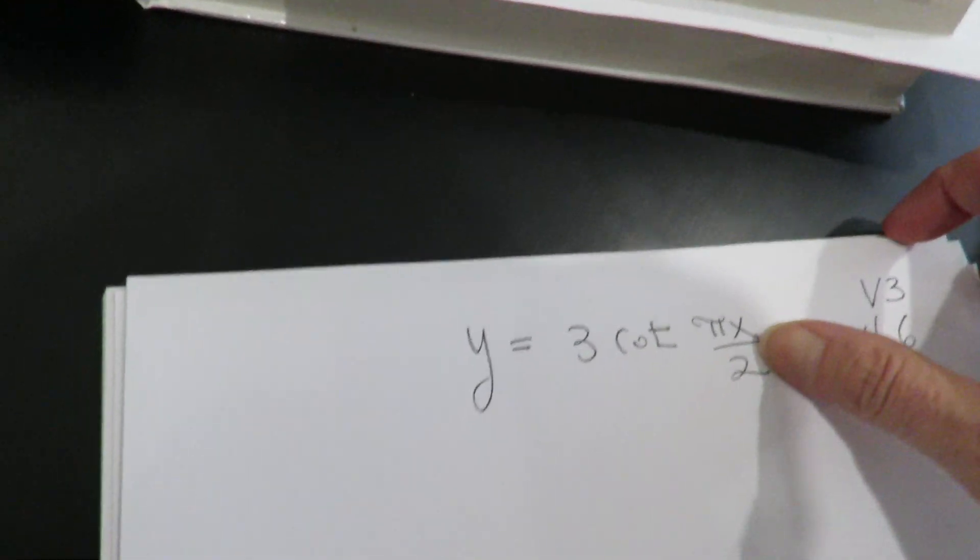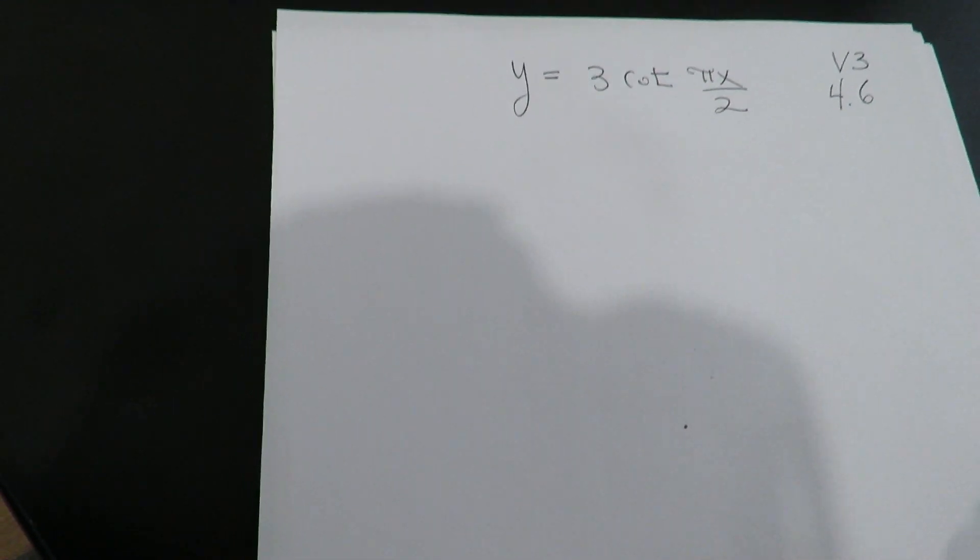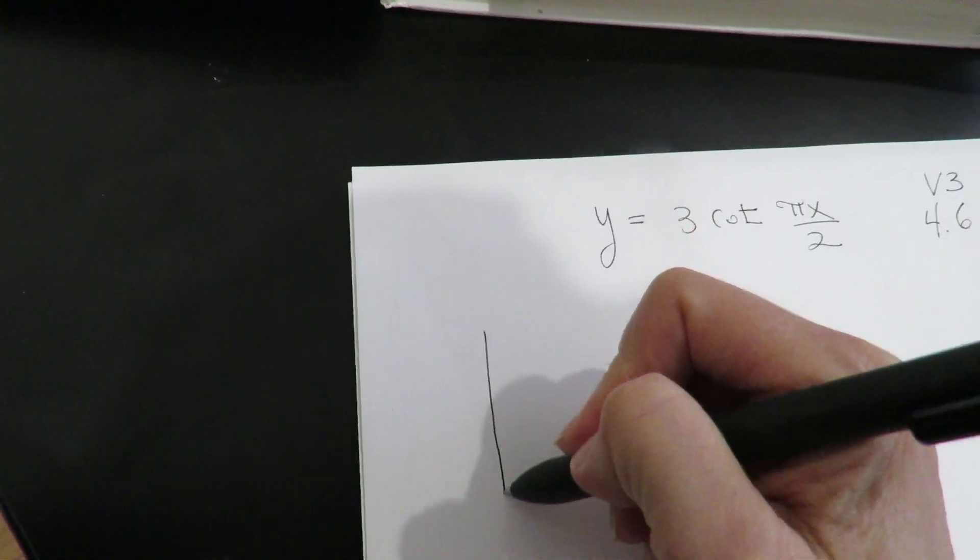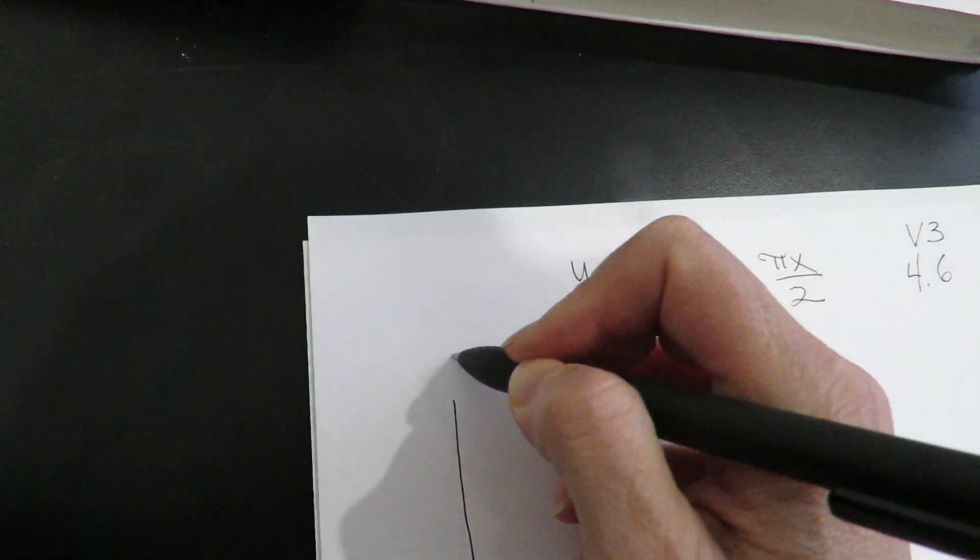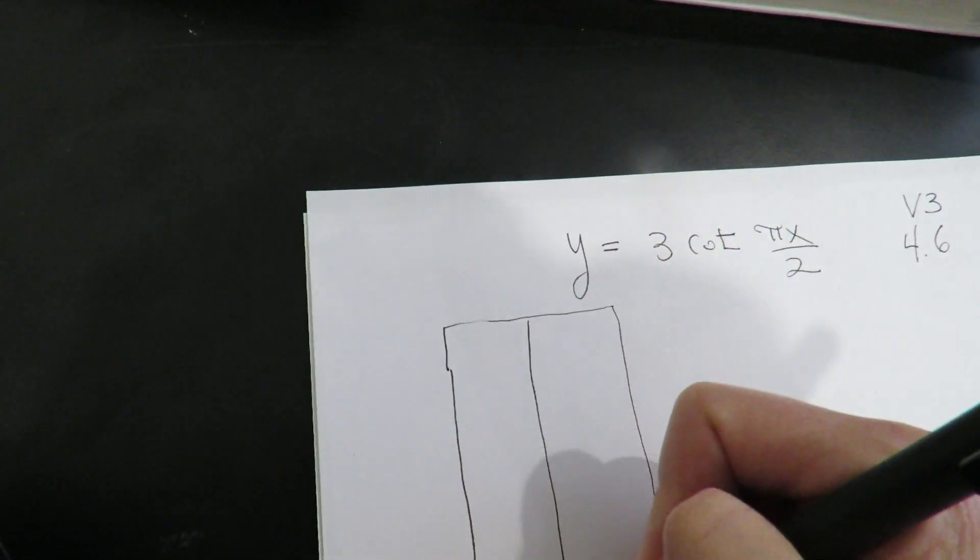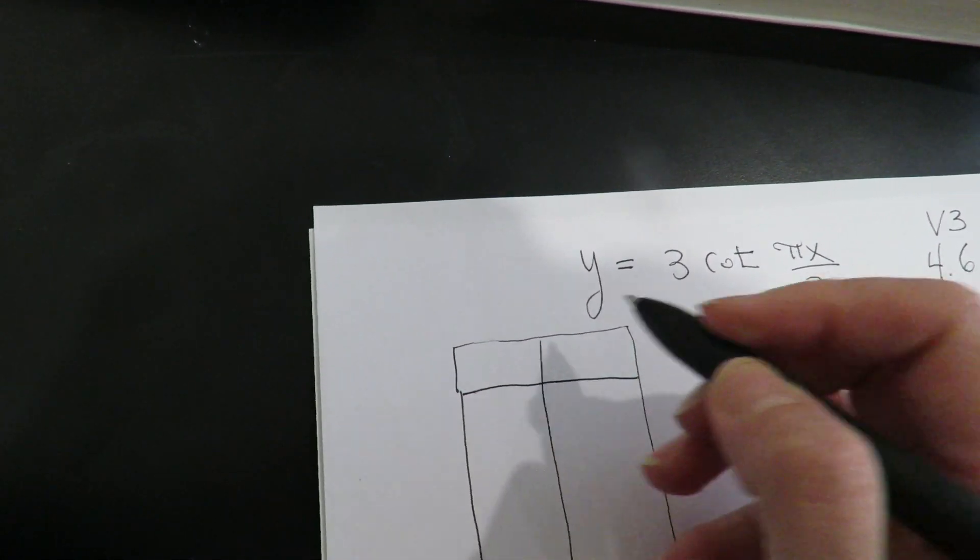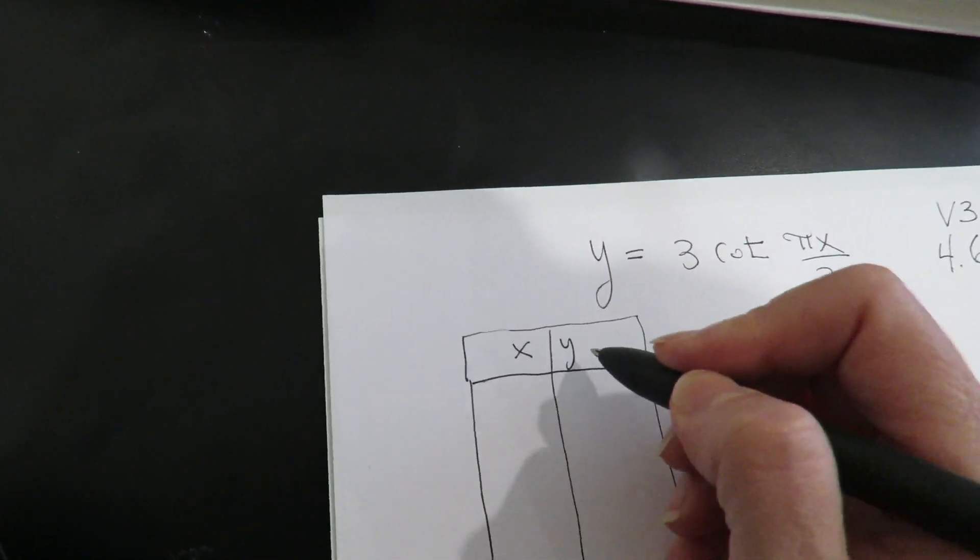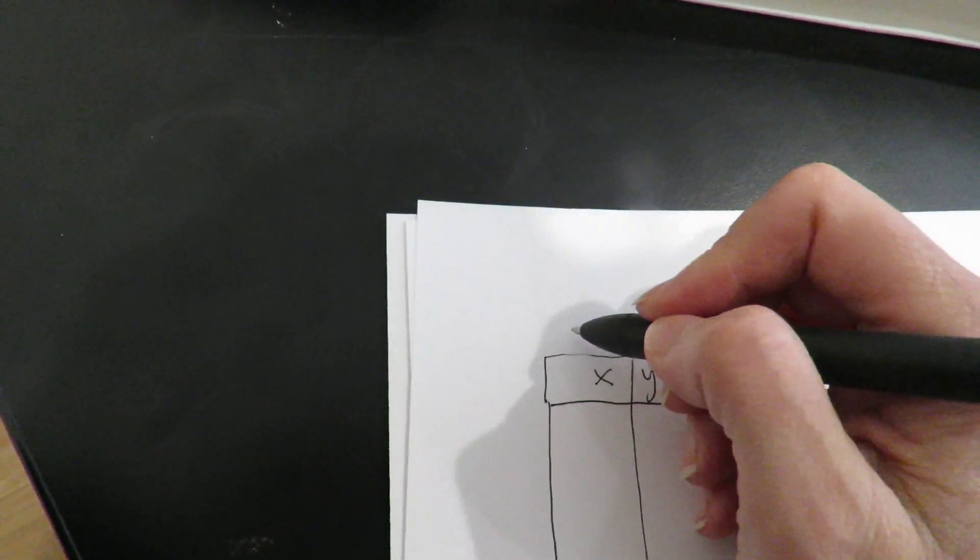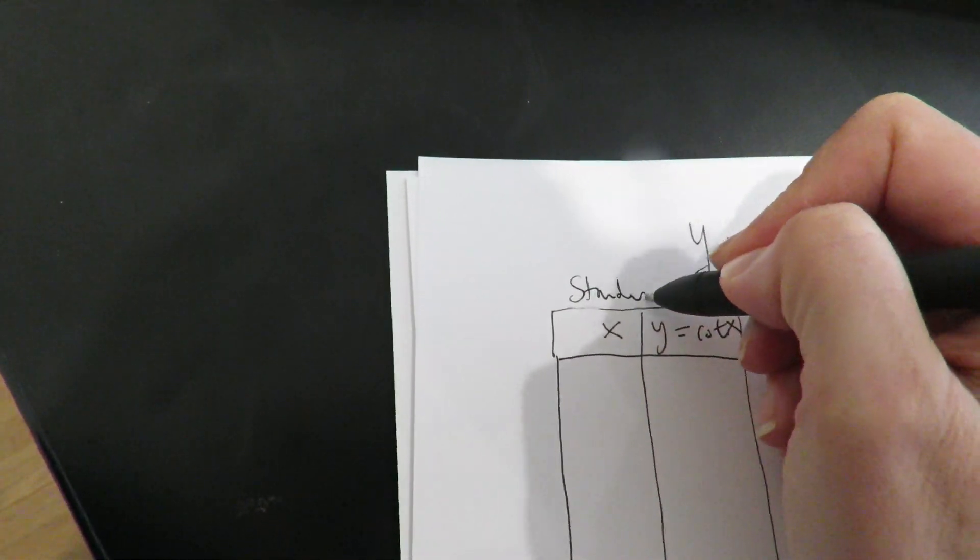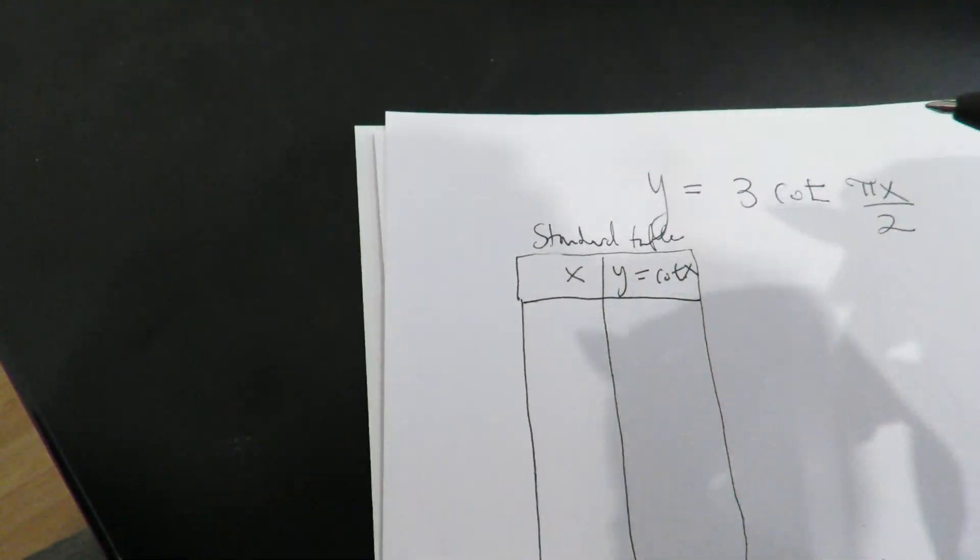I will just show you the table and not go through all the little details. I'll give you the standard table, so when you're taking test 3 you're going to reference the standard table and modify it to what you need to graph. So I'm just going to start with a basic cotangent function and again this is the standard table I'm going to write for you here.